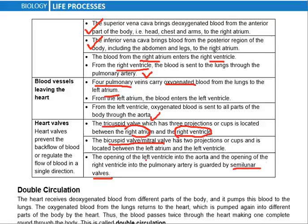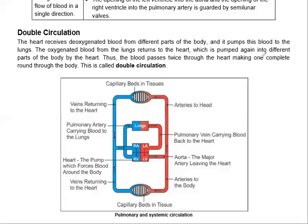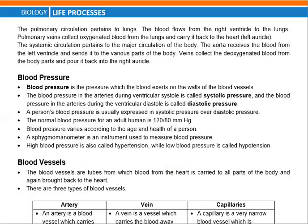Double circulation means that blood passes through the heart twice in one complete circuit — first to the lungs and back, then to the body and back. Pulmonary circulation pertains to the lungs: blood flows from the right ventricle to the lungs and returns. Systemic circulation carries blood from the left ventricle to the whole body through the aorta.